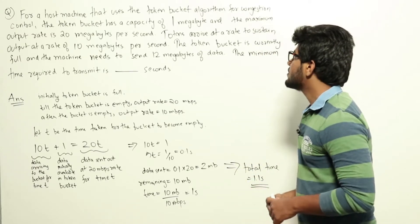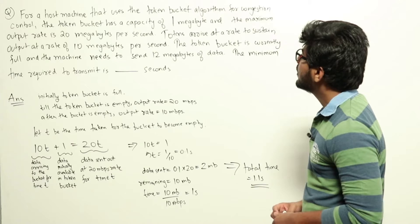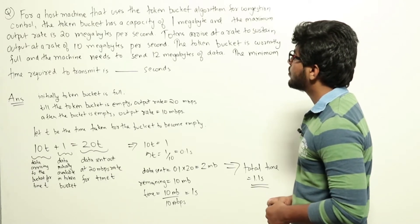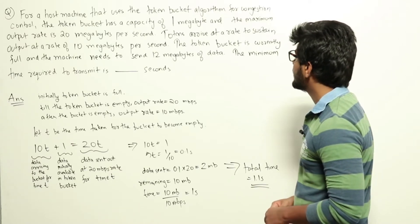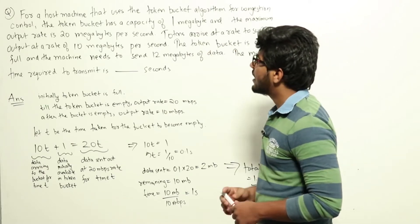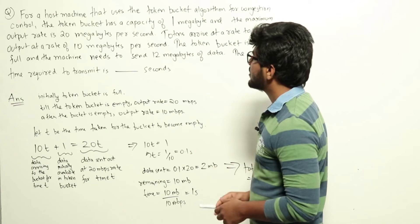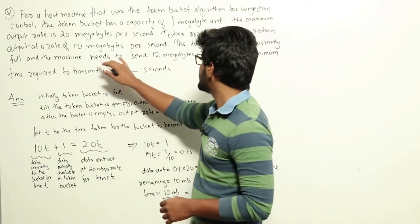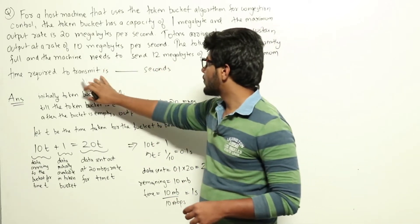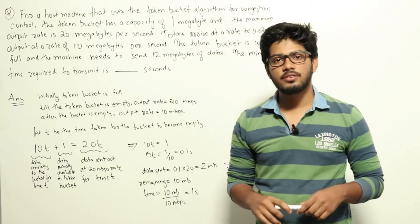For a host machine that uses the token bucket algorithm for congestion control, the token bucket has a capacity of 1 megabyte and the maximum output rate is 20 megabytes per second. Tokens arrive at a rate to sustain output at 10 megabytes per second. The token bucket is currently full and the machine needs to send 12 megabytes of data. The minimum time required to transmit is how many seconds?